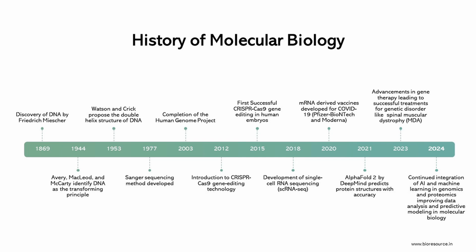In 1990, the Human Genome Project was launched. In 2003, the Human Genome Project was completed. In 2012, CRISPR-Cas9 gene editing technology was introduced. In 2016, the first human trial of CRISPR gene editing took place. In 2020, mRNA vaccines for COVID-19 were developed. In 2022, AlphaFold AI predicted protein structures. In 2023, advancements in single-cell sequencing technologies. In 2024, integration of AI and machine learning in genomics and proteomics. These milestones represent pivotal moments that have shaped our understanding of molecular biology and its applications.